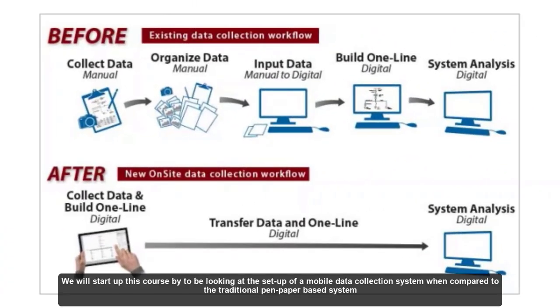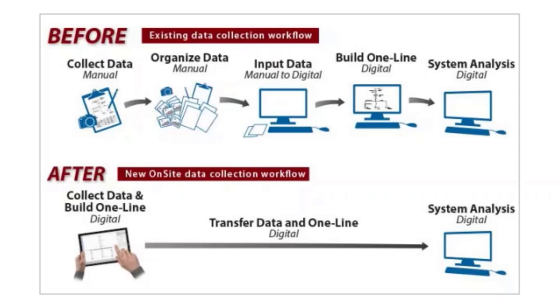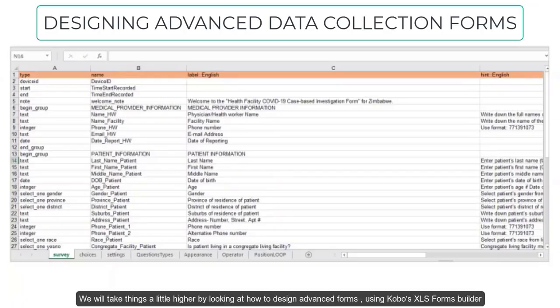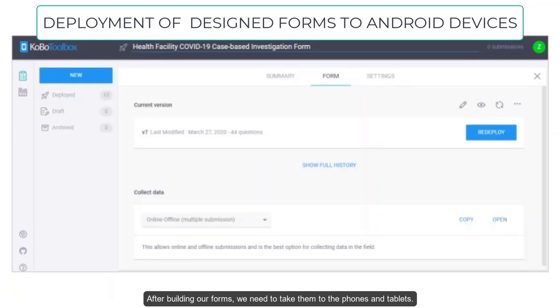We will start off this course by looking at the setup of a mobile data collection system compared to the traditional pen and paper-based system. We will then proceed to looking at how to design simple data collection forms using KoboToolbox's Online Form Builder, and take things a little higher by looking at how to design advanced forms using Kobo's XLS Forms Builder. After building our forms, we will look at how to deploy them on Android devices.